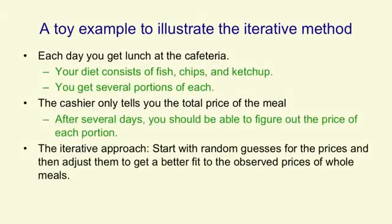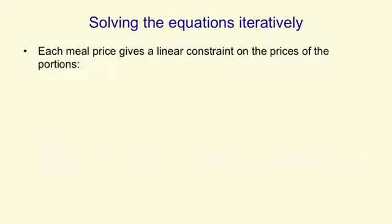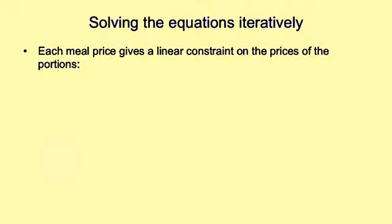In the iterative approach, you start with random guesses for the prices of portions, and then you adjust these guesses so that you get a better fit to the prices that the cashier tells you. Those are the observed prices of whole meals. So each meal, you get a price, and that gives you a linear constraint on the prices of the individual portions.